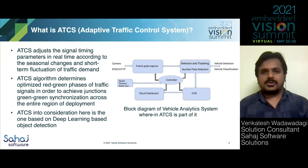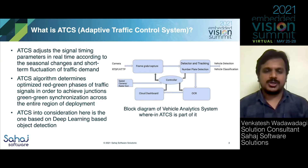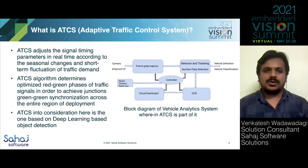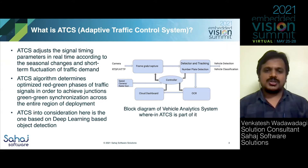The adaptive traffic control system algorithm mainly comes with two objectives. The first one is to optimize red-to-green phases of traffic signals. The second one is to achieve green-to-green synchronization across all the junctions in the entire deployment region.